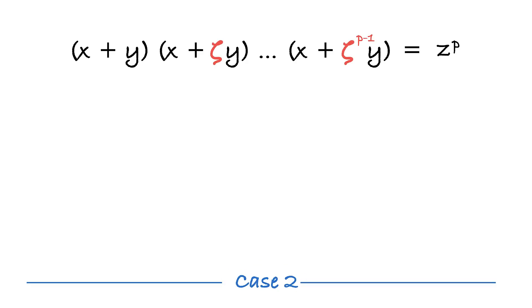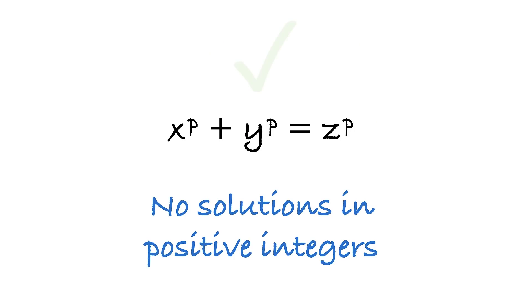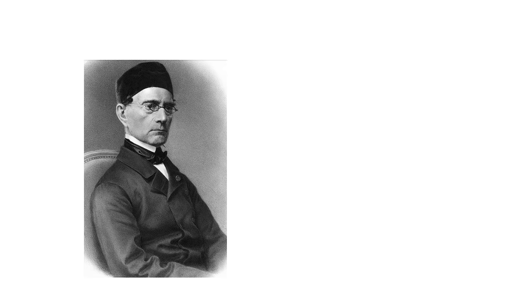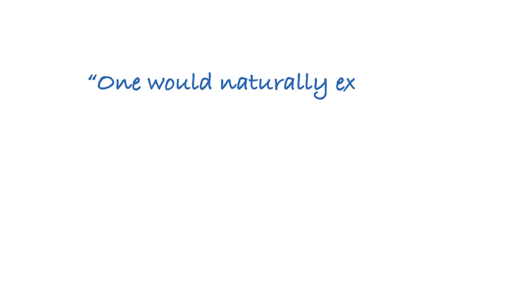Case two is somewhat different but utilizes similar logic based on decomposition of the left side. And this would have concluded the proof of Fermat's Last Theorem for all primes. And actually, that's what Lamé believed was the case, but it turned out that he was wrong.